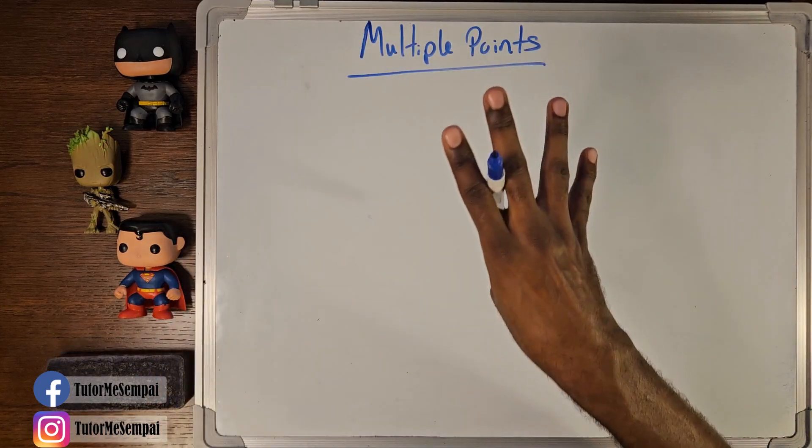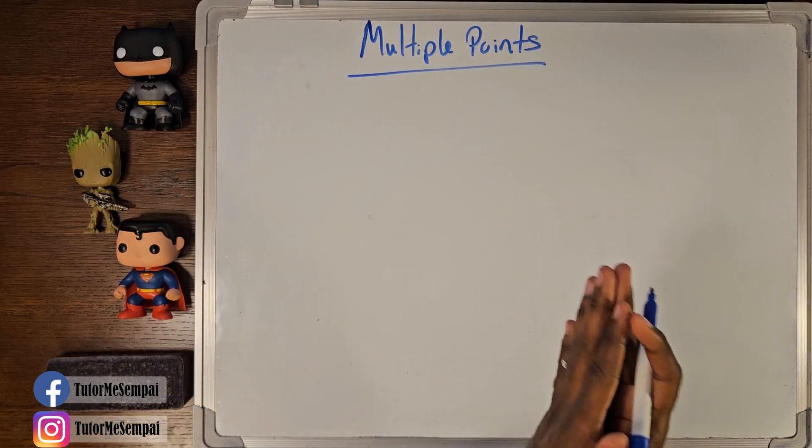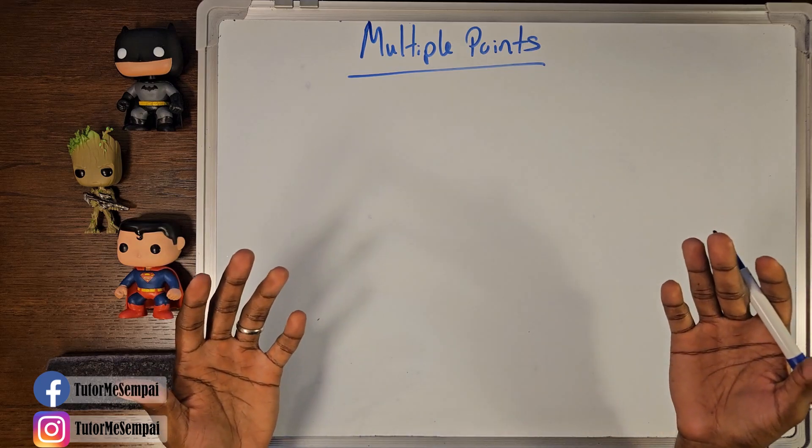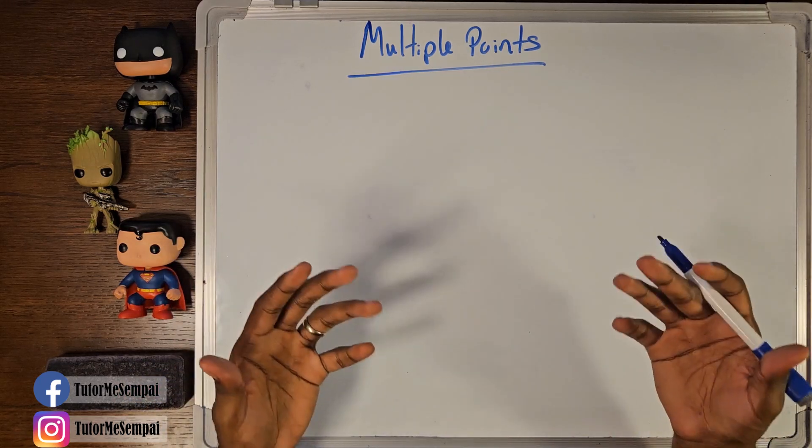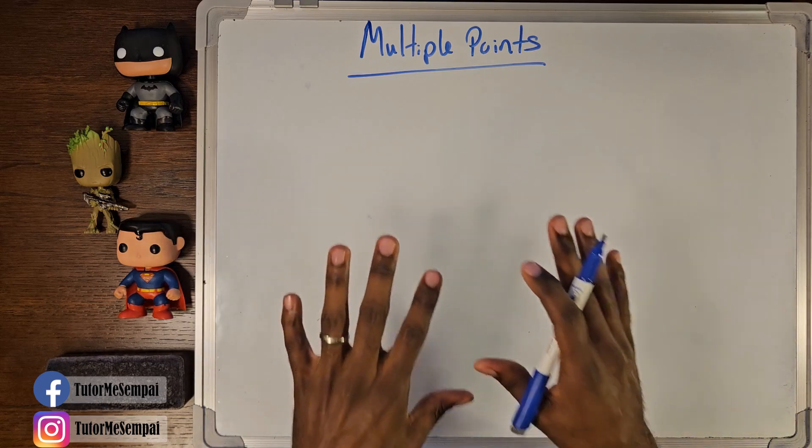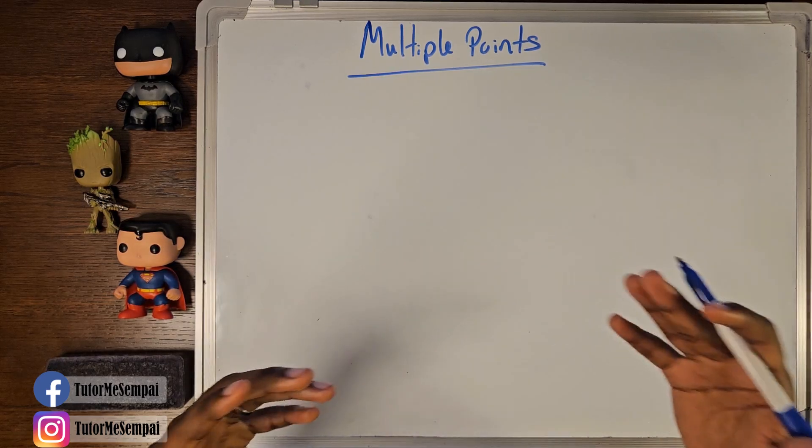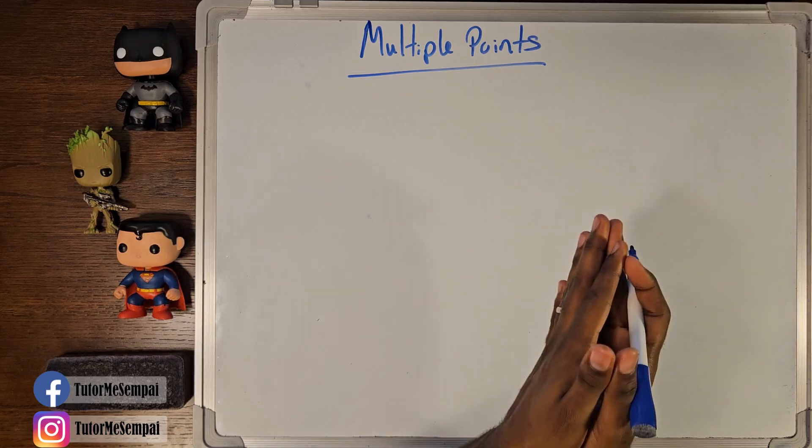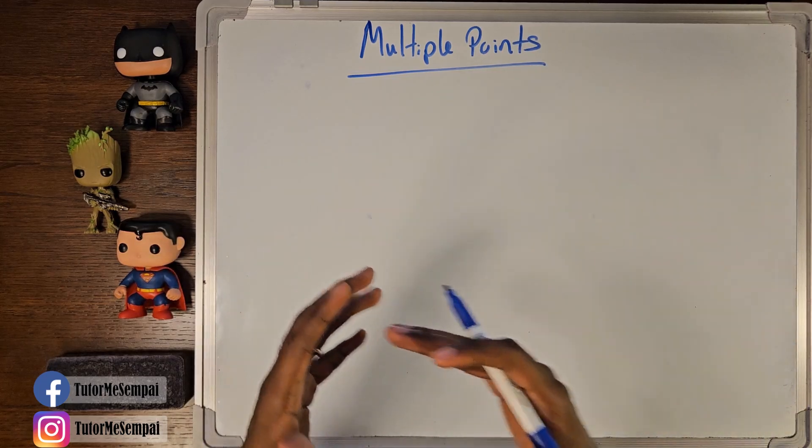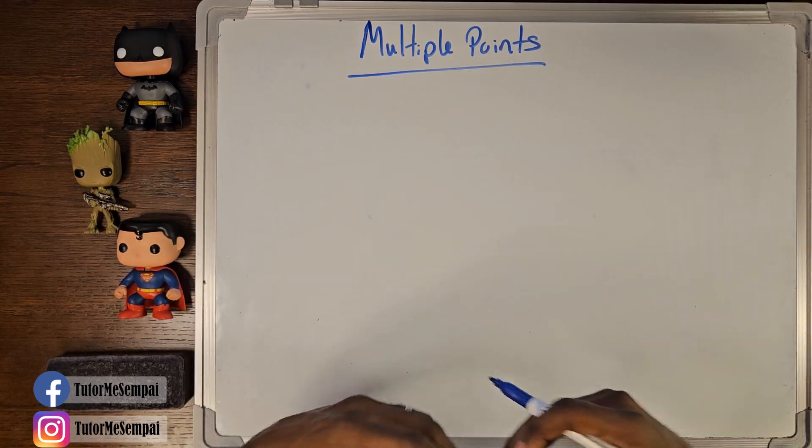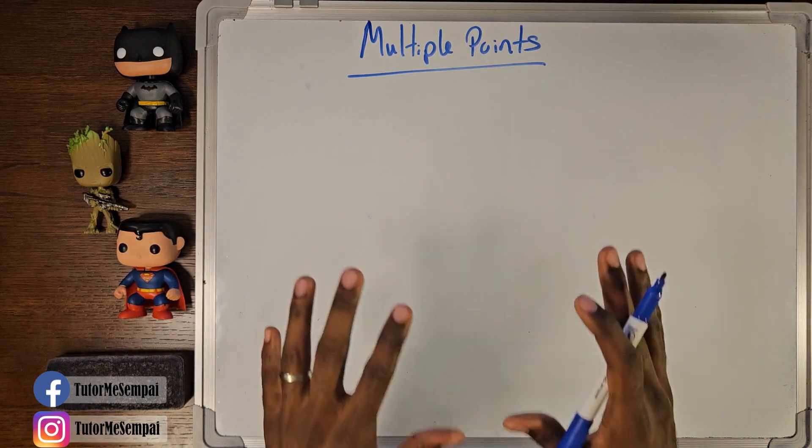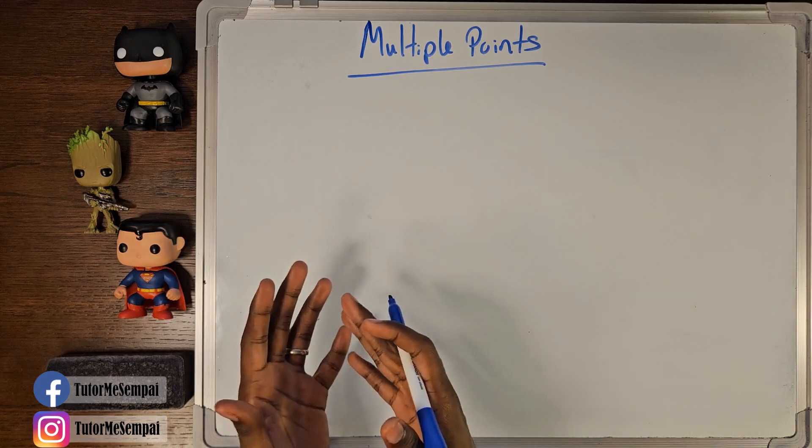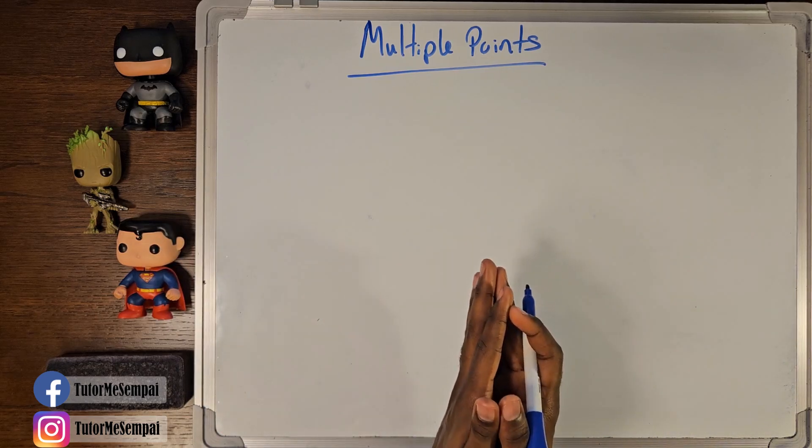So today we're going to be talking about four different ways of naming our angles. Now you may not have to use all of these, but there may come a time when more than one of these will be showing up as you're dealing with angles. So we're going to talk about them all today. How we name our angles is really going to be dependent on how the angle looks, how the angle is presented to us. The first two ways of naming our angles that I'm covering today are actually related, so we're going to talk about them at the same time. And to get started, our angle has to look like this.